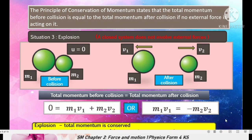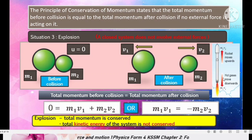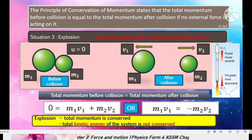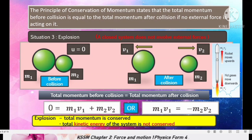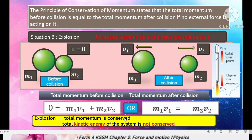Another example of explosion is rocket propulsion. A rocket releases hot gases downward, producing momentum of the hot gases downward. This produces an equal momentum upward, causing the rocket to move up — momentum of the hot gases equals momentum of the rocket upward but in opposite direction. Similarly, a rifle and bullet before firing are at rest; the bullet firing is also an example of explosion. In explosion, total momentum is conserved, but total kinetic energy is not conserved.